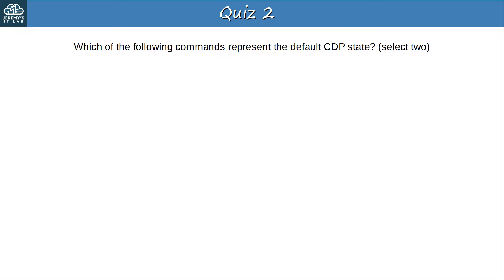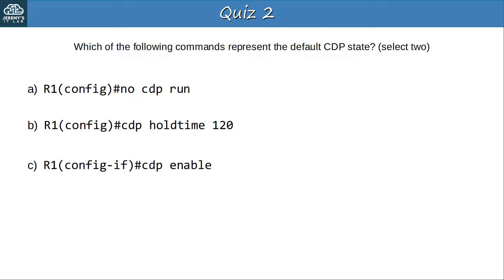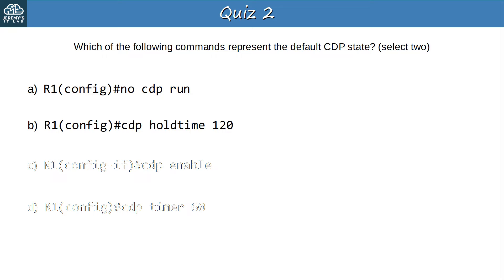Question 2: Which of the following commands represent the default CDP state? Select 2. A: NO CDP RUN. B: CDP HOLDTIME 120. C: CDP ENABLE from interface config mode. D: CDP TIMER 60. The answers are C and D. CDP ENABLE enables CDP on an interface, which is the default state. D sets the CDP message timer to 60 seconds, which is the default. NO CDP RUN disables CDP on the router, which is not the default state. CDP HOLDTIME 120 sets the hold time to 120 seconds, but the default CDP hold time is 180 seconds.